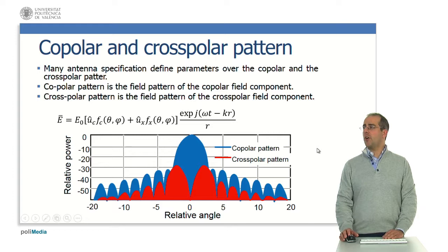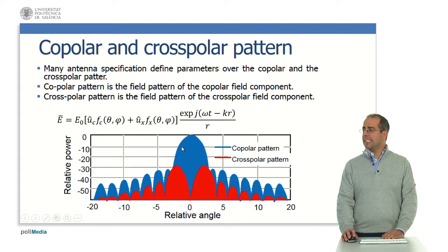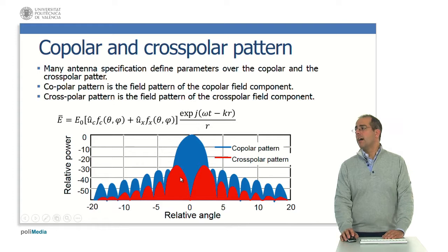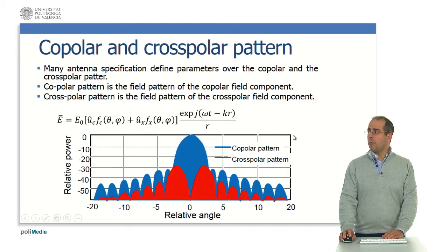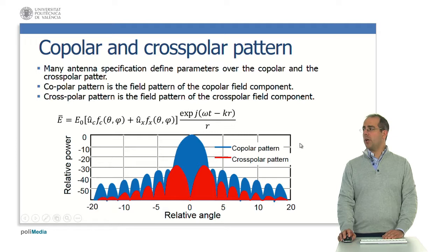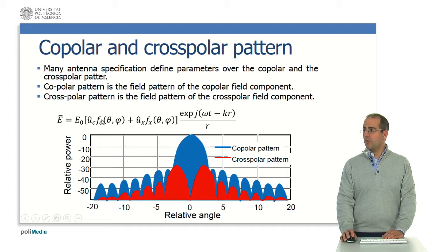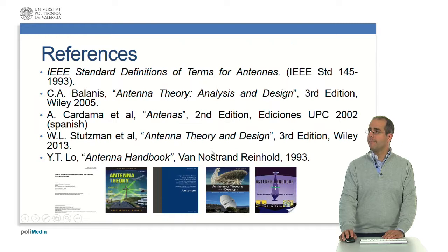Many antenna specifications define parameters over the copolar and cross-polar pattern. We can represent the radiation pattern of an antenna in terms of copolar — the desired polarization — and in terms of cross-polar pattern — the orthogonal component. Copolar pattern is the field pattern of the copolar field component, and cross-polar pattern is the field pattern of the cross-polar field component. The electrical field can thus be divided into copolar and cross-polar components with their respective field patterns.